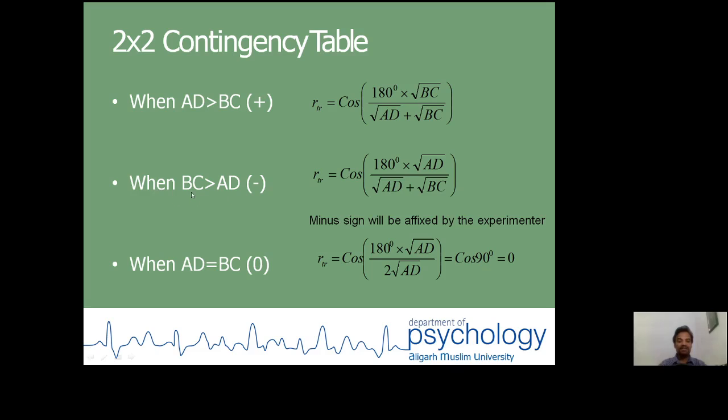In second situation, there is a possibility when BC is greater than AD, the tetrachoric correlation between two variables will be negative. In formula, in numerator, this BC has been replaced by AD. And the denominators are same in both cases. Since critical values are not given in negatives or it is not possible to have the cosine value in negative, but in case of tetrachoric correlation, it is suggested the experimenter must affix the negative sign in this condition. The third case, when AD is equal to BC, the tetrachoric correlation between two variables will be zero.